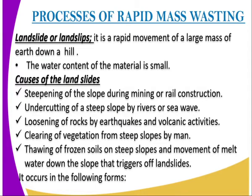One, it is the landslide or the land slip. We have already looked at the other types of rapid mass wasting. Now we are going to look at the landslide or the land slip. It is the rapid movement of the large mass of the earth downhill. The water content of the material is small, so the material that is large is that large slide or rock.